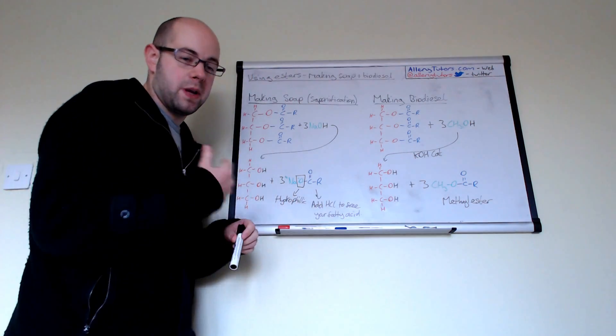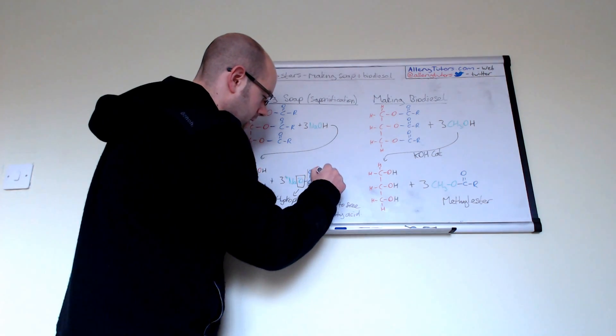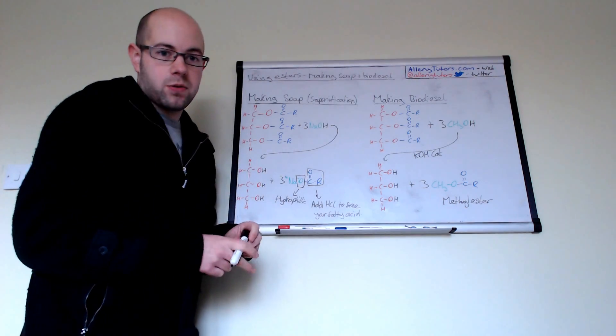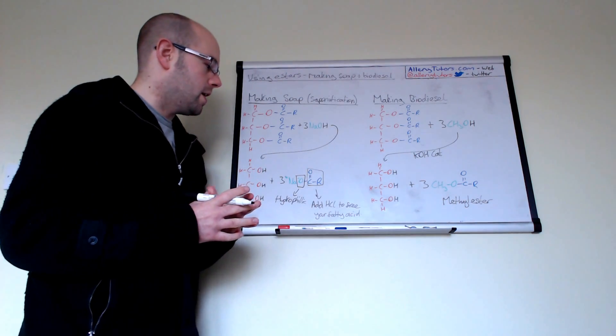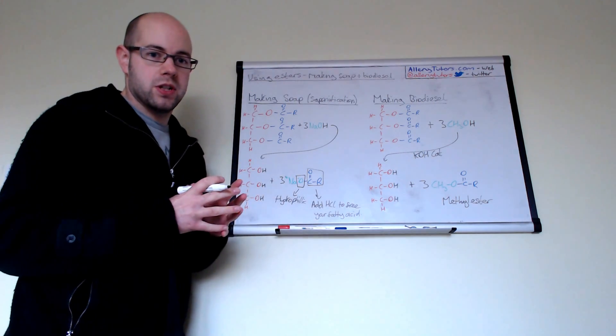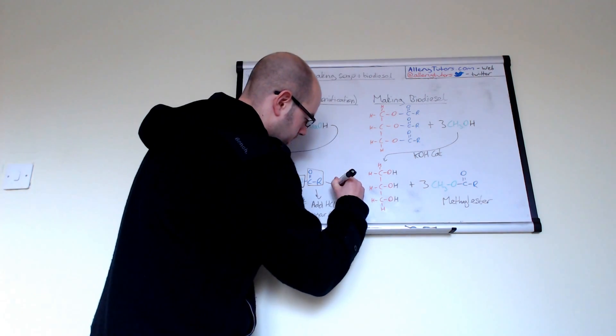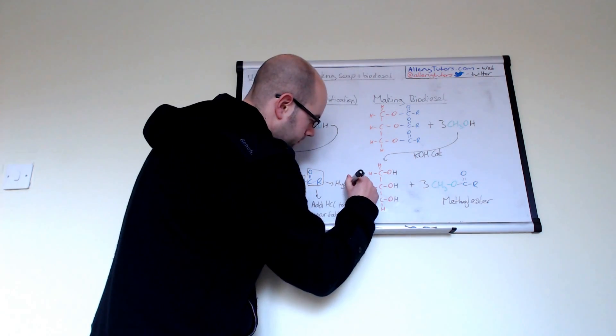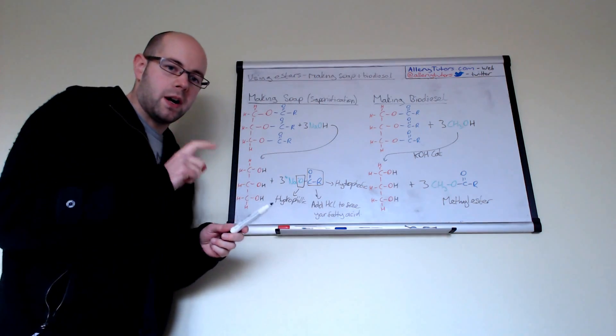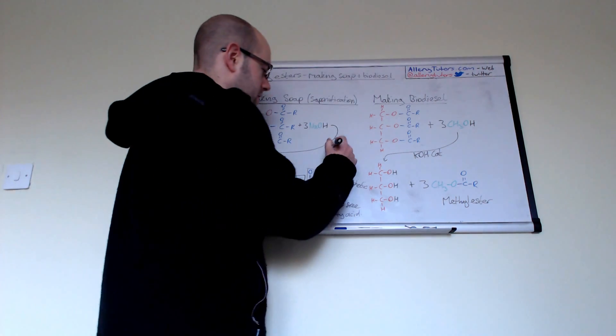So hydrophilic means it likes to be with water. Then you've got another bit - this blue bit here with an R group. That R group could be 20 carbons long, a very long hydrocarbon. The R group has no polarity so it struggles to mix with water - it's virtually insoluble. We describe this bit as hydrophobic. So we have two parts: a hydrophilic head and a hydrophobic tail.